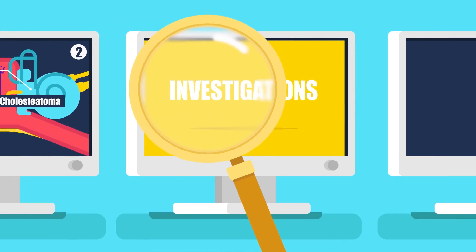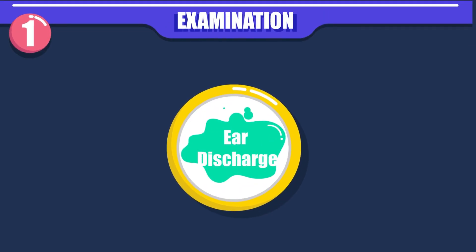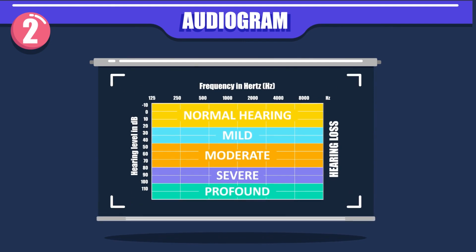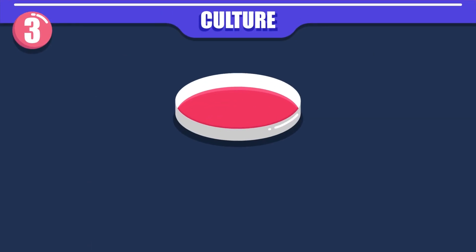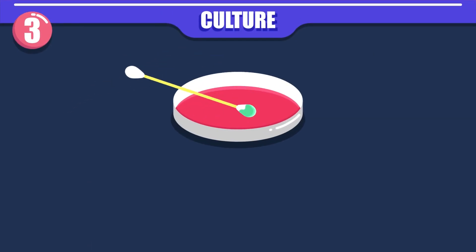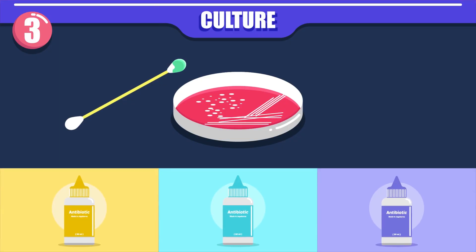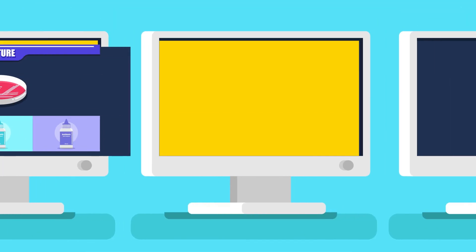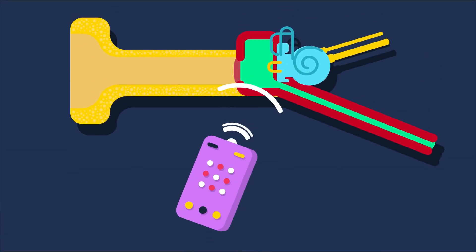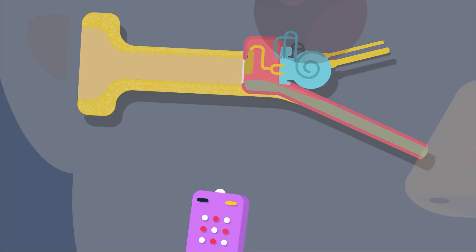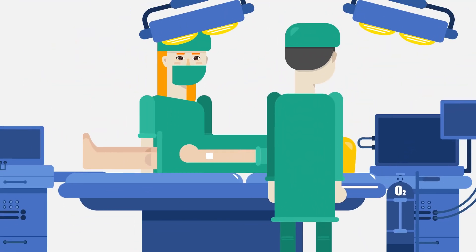Investigations: (1) Examination under microscope. (2) Audiogram — it gives an assessment of degree of hearing loss and its type. (3) Culture and sensitivity of ear discharge — it helps to select proper antibiotic eardrops. Treatment: the aim is to control infection and eliminate ear discharge, and at a later stage, to correct the hearing loss by surgical means.